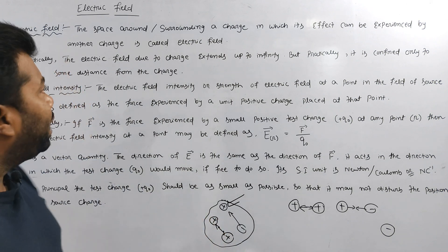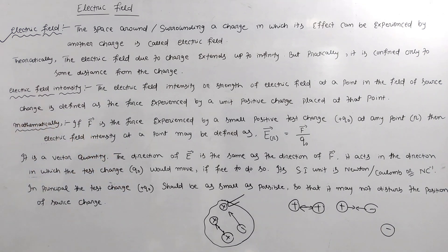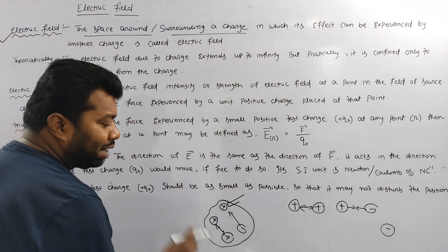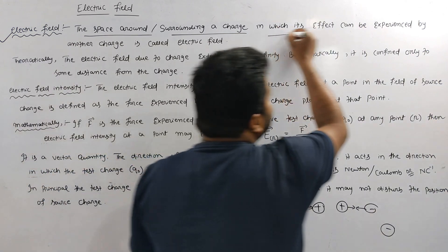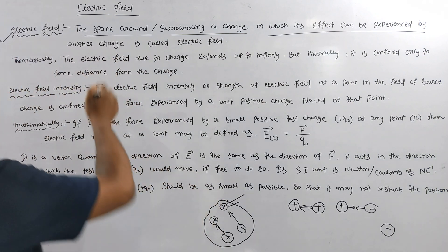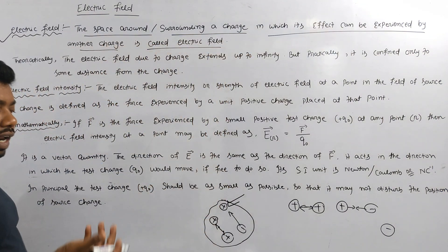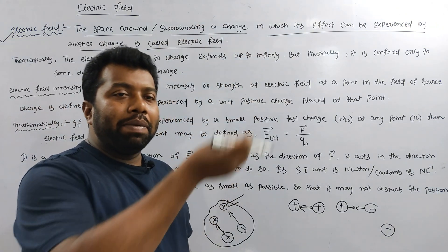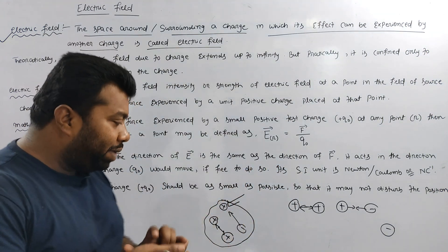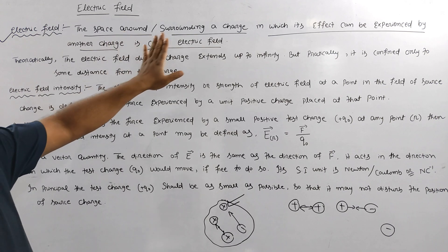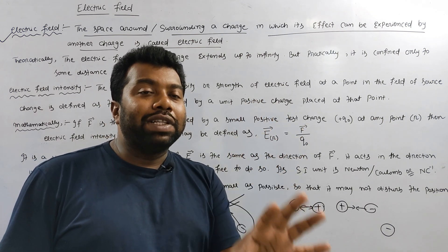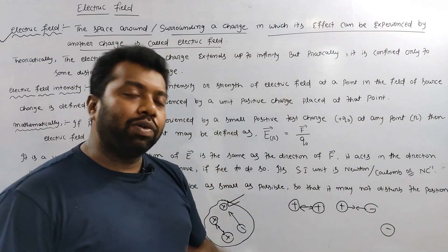Which one? See those in mathematical terms. The space around and surrounding a charge is the area in which its effect can be experienced by another charge, which is called the electric field. Which is simple.